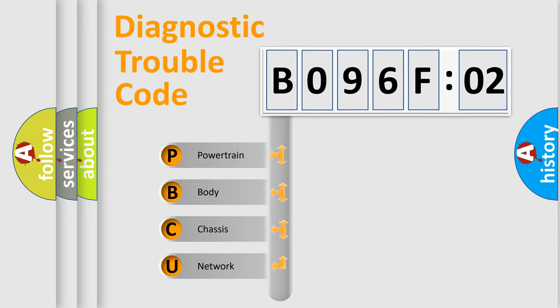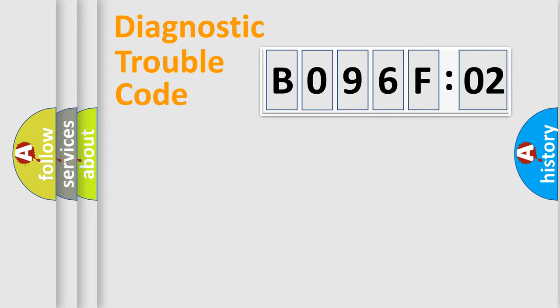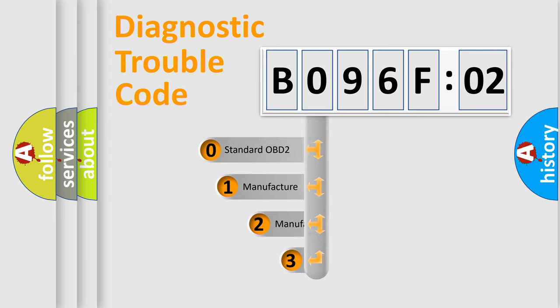We divide the electric system of an automobile into four basic units: Powertrain, Body, Chassis, and Network. This distribution is defined in the first character code.